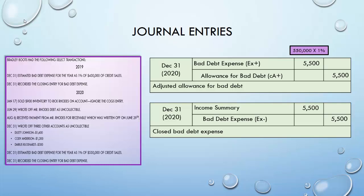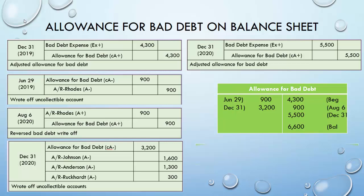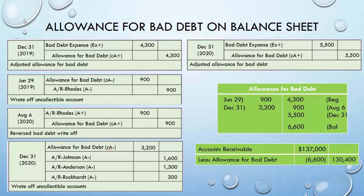Let's look at the Allowance for Bad Debt T-account. At the end of 2019 we credited it for $4,300, which becomes the beginning balance for 2020. On June 29th we debited it $900 (write-off); on August 6th we credited it $900 (reversal). On December 31st we debited $3,200 (three write-offs), then credited $5,500 (year-end adjustment). Adding credits and subtracting debits gives us a new ending balance of $6,600 in Allowance for Bad Debt.